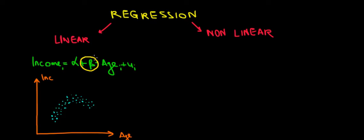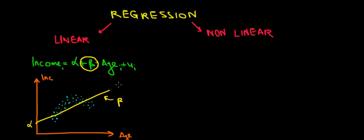Let's suppose we have an example where we are plotting the relationship between age and income. What we can notice is that if we fit a line, with our constant intercept, and then this slope is going to be our beta, we are predicting our income based on this model. We notice that we are not actually fitting the data quite well — we have quite some differences because we are having a nonlinear relationship. It is looking like a curve.